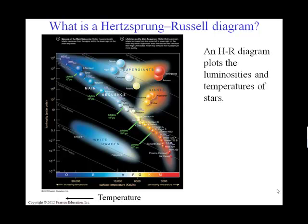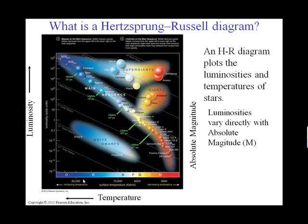An HR diagram has temperature along the x-axis. Notice we have increasing temperature from right to left, so it's getting hotter from right to left. Notice along the y-axis we have luminosity. The star is pumping out more energy as you go up along the y-axis. And remember that we have this brightness scale called absolute magnitude, how bright the star would appear at a common distance of 10 parsecs. So absolute magnitude goes hand-in-hand with luminosity.